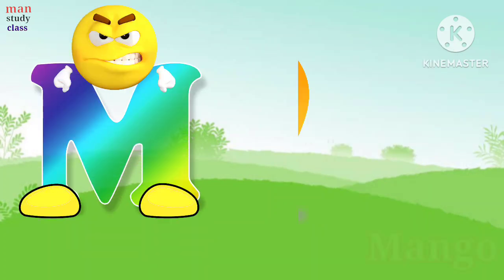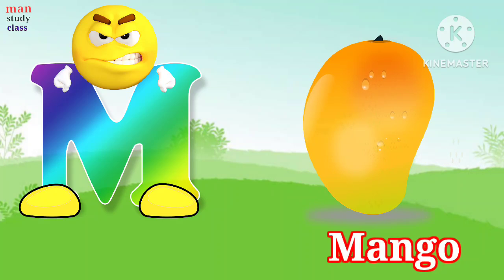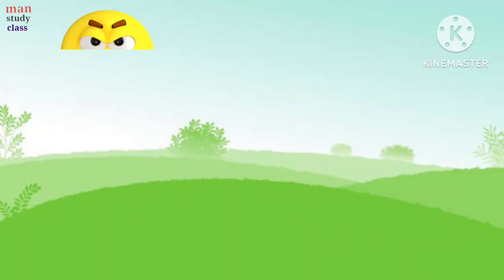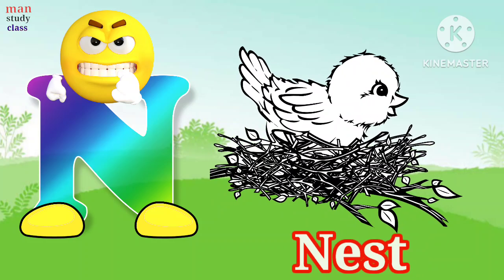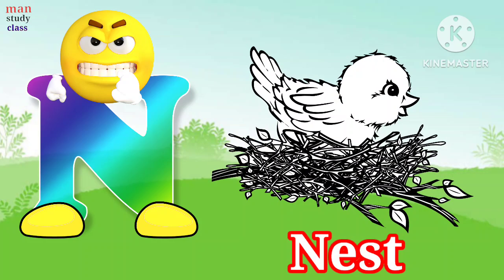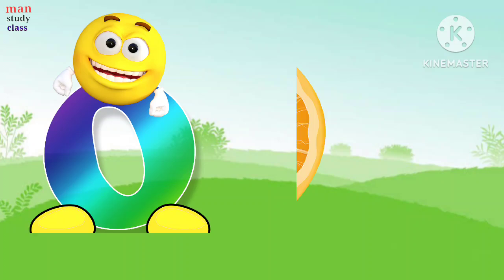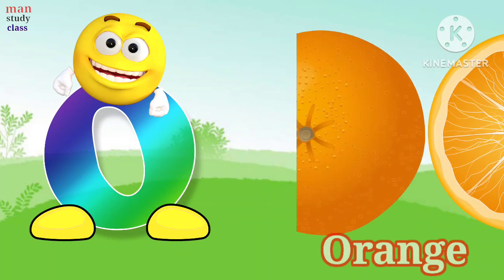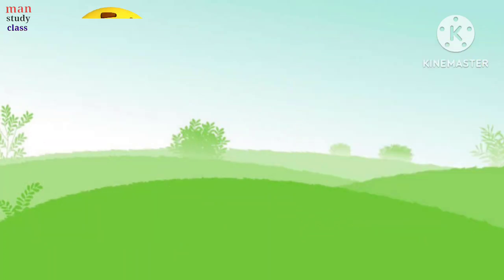M for mango, mango means aam. N for nest, nest means ghosla. O for orange, orange means santara.